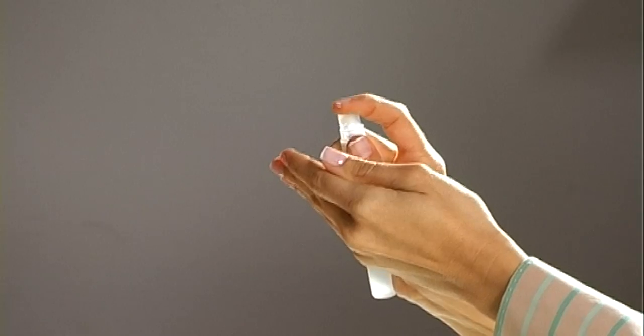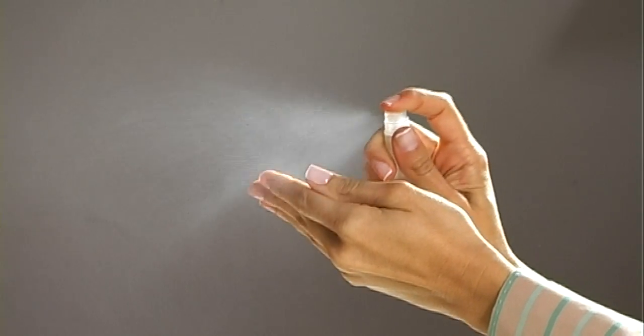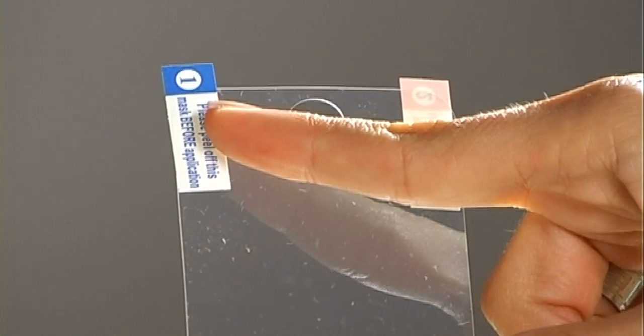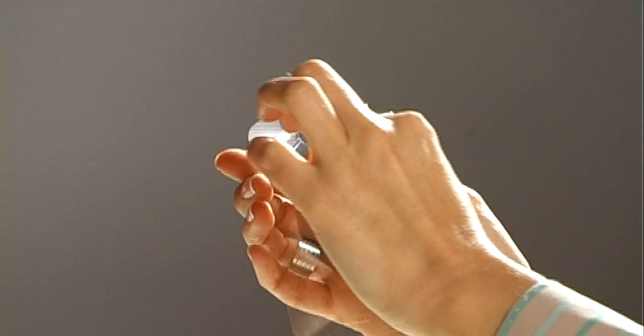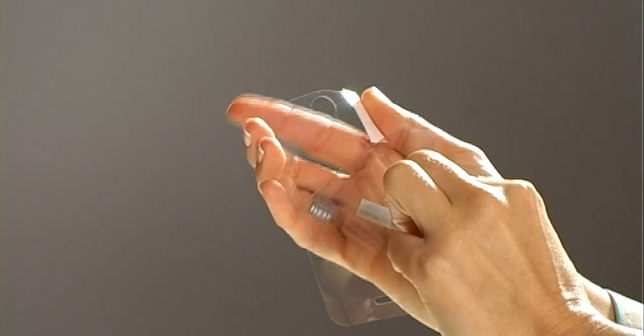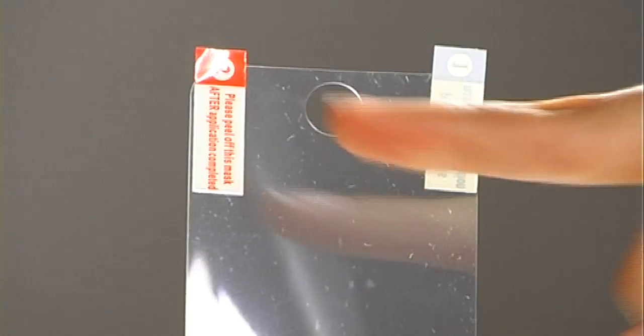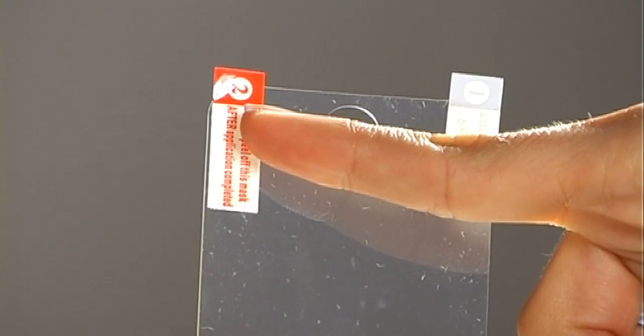Take out the front adhesive label from the plastic bag. Spray some solution on your fingertips. The front adhesive has a protective layer labeled as number 1, which needs to be removed in order to attach the front adhesive label to the phone screen. Additionally, there is a protective layer on the anti-scratch side marked as number 2.